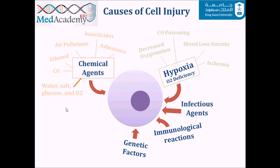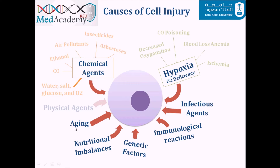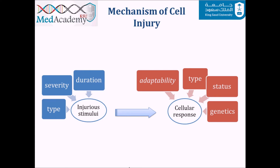Genetic factors play a major role in cell injury, especially deficiency of functional proteins or accumulation of damaged DNA, which can lead to apoptosis. Nutritional imbalances such as protein-calorie insufficiency or vitamin deficiencies are another cause. Aging causes cell injury by altering the replicative and repair abilities of the cell. Finally, physical agents — temperature, parasites, and so on — can directly harm the cell.